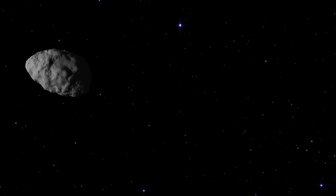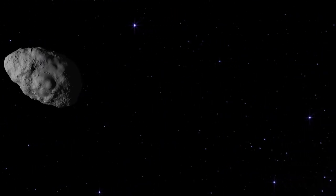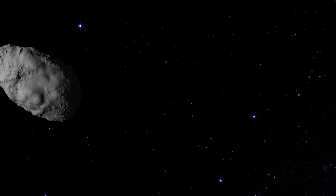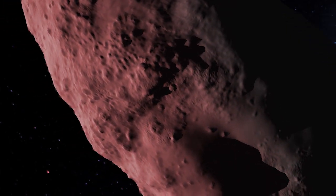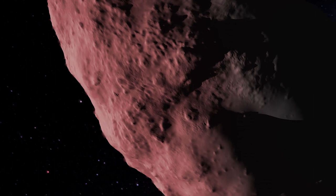But Bennu will not stay in place. Dull, non-reflective, it slowly migrates toward the sun. Solar heating turns its warm side into a low-intensity thruster.